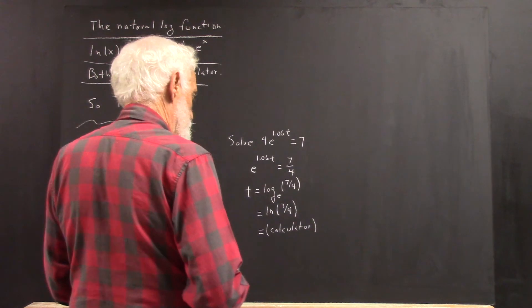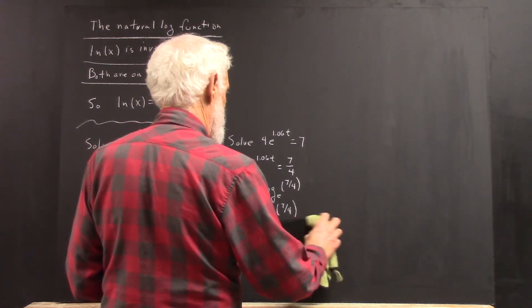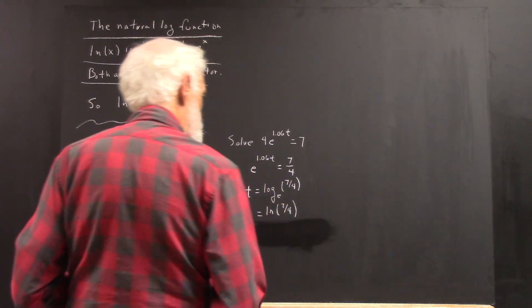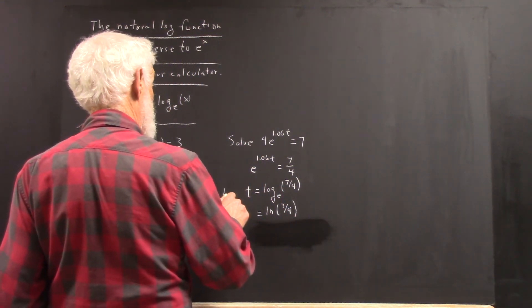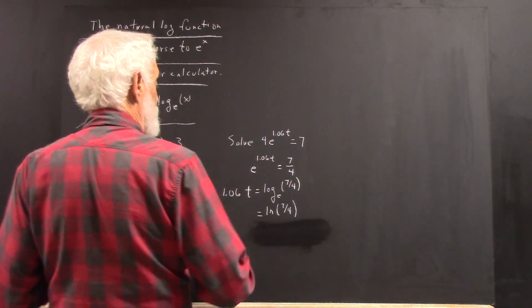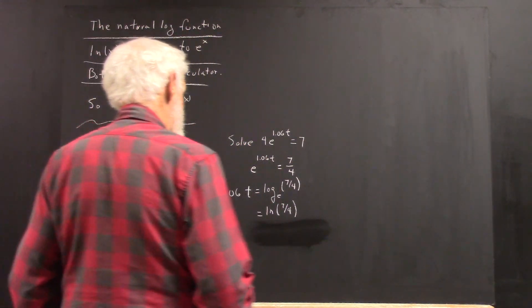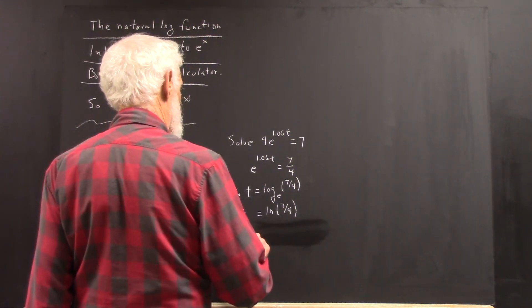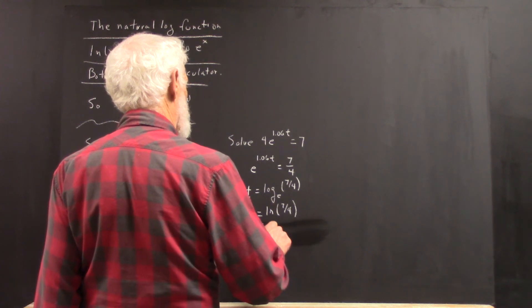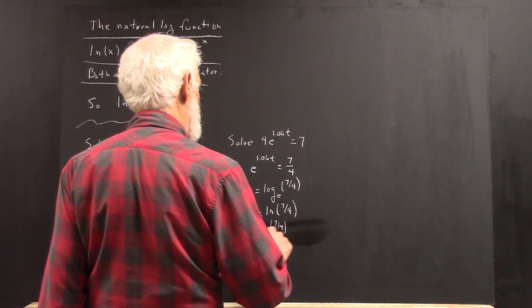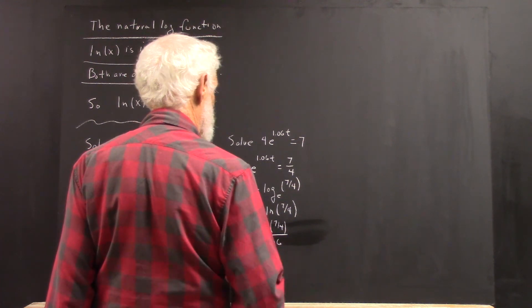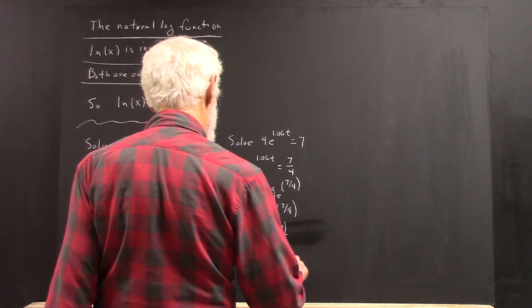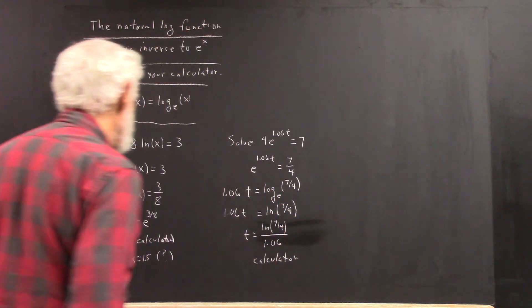That's ridiculous. Because I was trying to estimate that and getting something that didn't make any sense. It's 1.06t, and I hope you noticed that when I did that. So 1.06t equals the natural log of 7 fourths. And t is the natural log then of 7 fourths divided by 1.06. And then you use your calculator to get all the details in there this time.